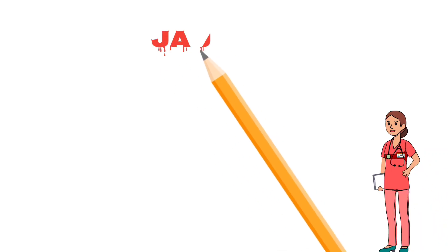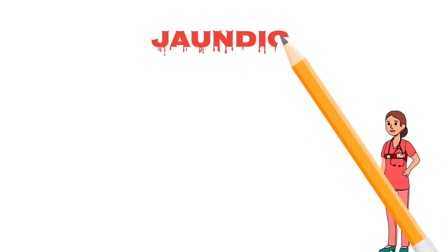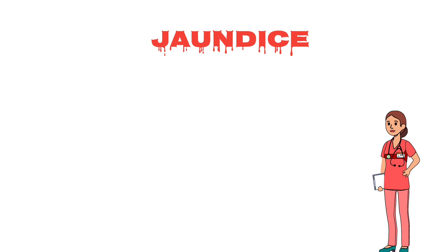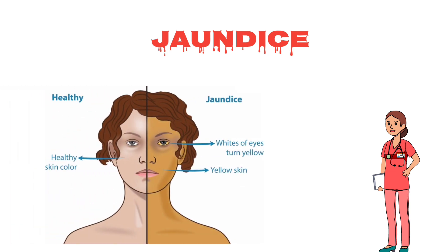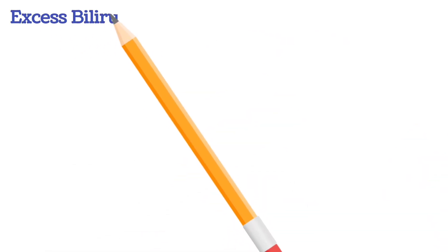Hello everyone, welcome to our channel. In this video, I am going to explain about jaundice. Jaundice occurs because of excessive bilirubin pigment in the blood.